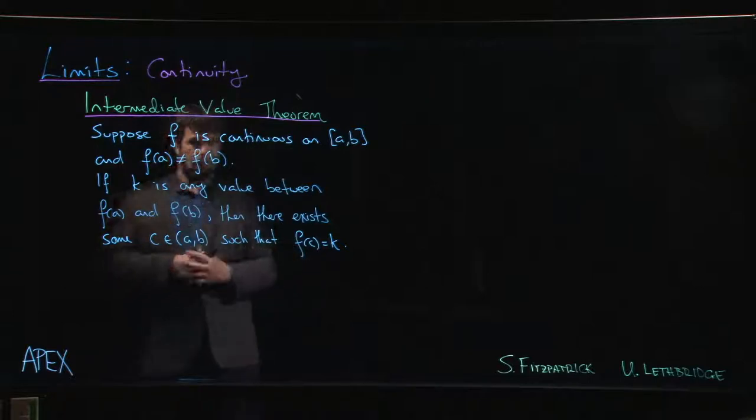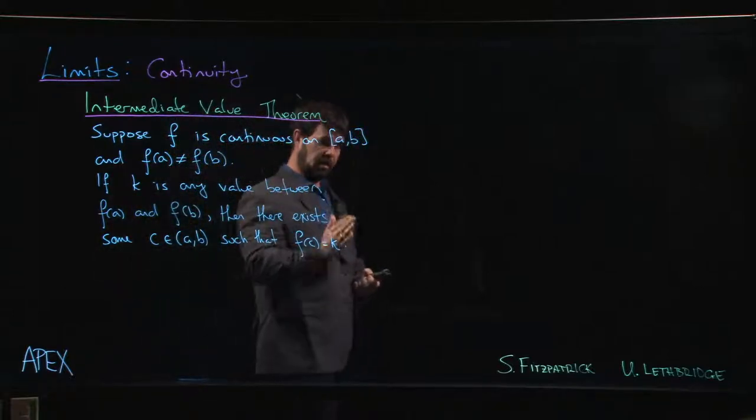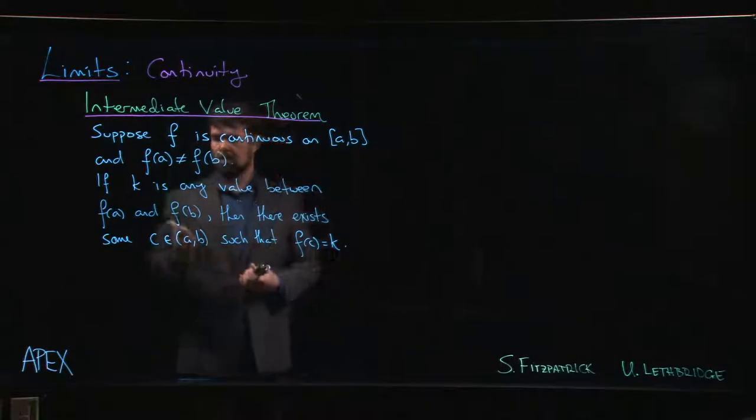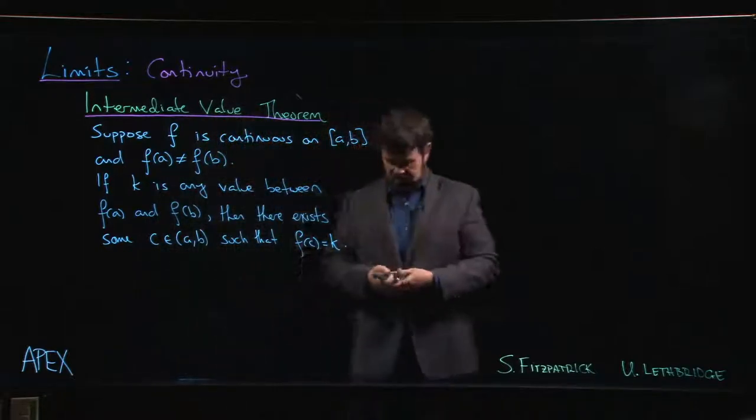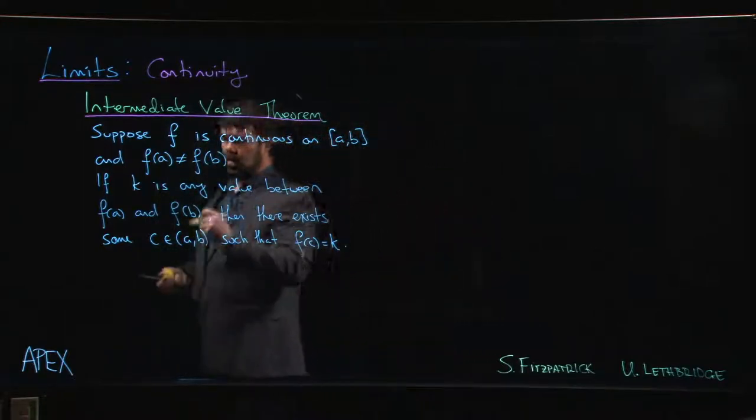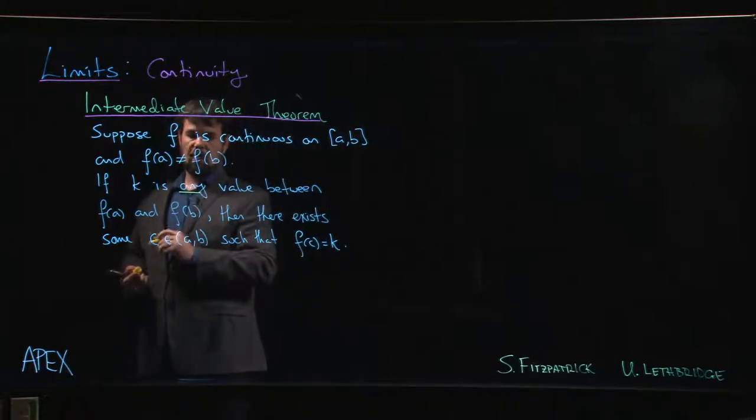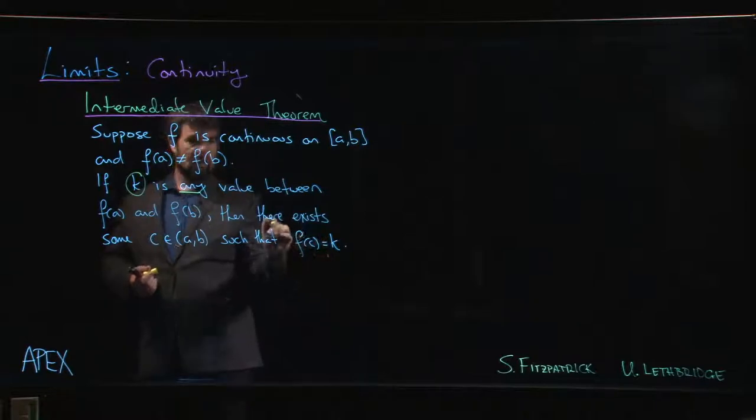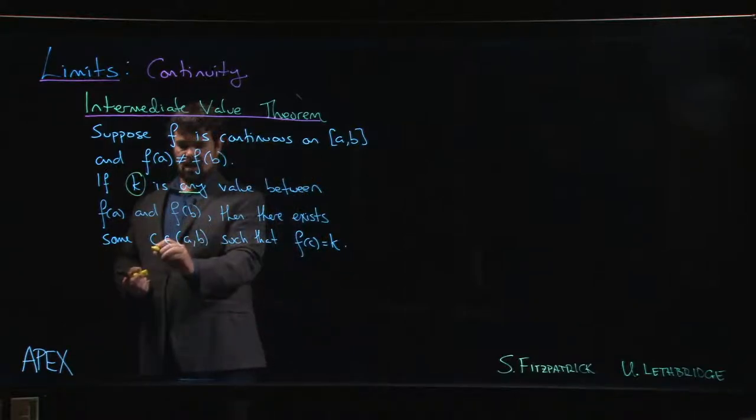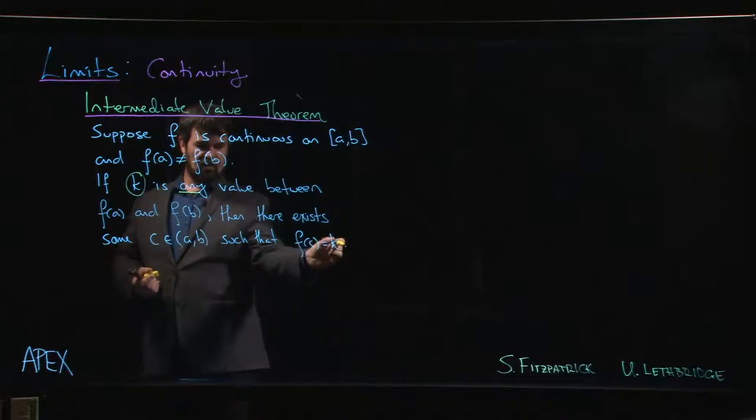Maybe it's bigger at the left endpoint than the right or maybe it's smaller, doesn't matter. You've got some y value that's in between the two y values you have at the endpoints. The Intermediate Value Theorem guarantees that no matter which y value you choose, this K, there will always be some point between a and B where when you take that number and plug it into the function you get K.